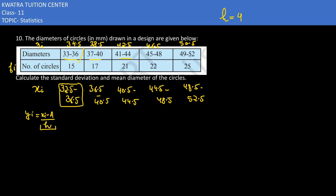Now we calculate yi = (xi − a) / h, where h is the gap between class intervals, which is 4. Taking a = 42.5 as the assumed mean: for xi = 34.5, (34.5 − 42.5) = −8, divided by 4 gives −2. For xi = 38.5, (38.5 − 42.5) = −4, divided by 4 gives −1. For xi = 42.5, yi = 0. For xi = 46.5, yi = +1. For xi = 50.5, yi = +2.